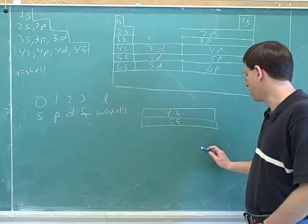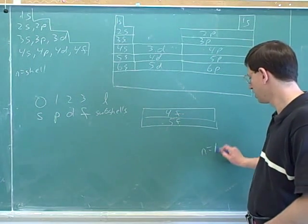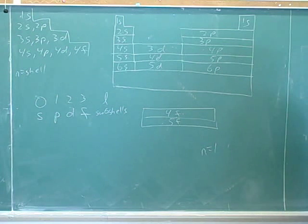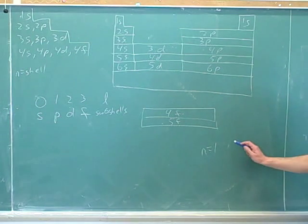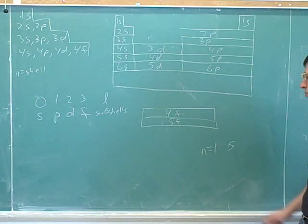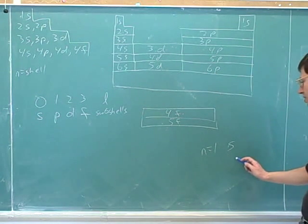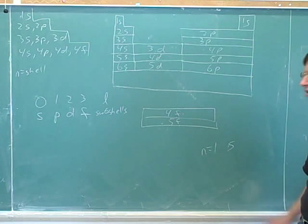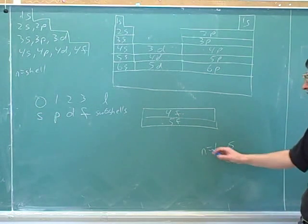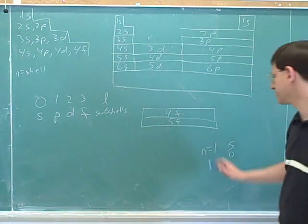Now let's suppose that N equals one. Which subshells does that have? Which subshells does the first shell have? S. Anything else? No. So what else does it have? It has zero. And that's it. When N is one, these are the only possible subshells.